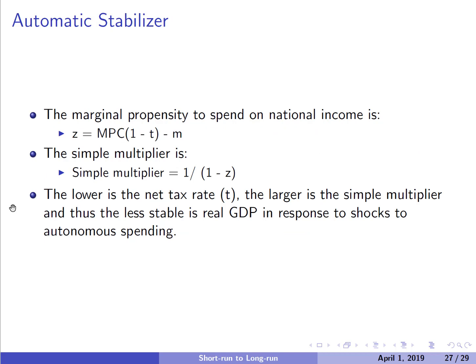Automatic stabilizers are related to the slope of the AE curve, Z, which is related to the slope of the AD curve. Anything that makes Z small makes the simple multiplier smaller and the economy more stable. A higher tax rate (higher little t) makes Z smaller. A lower marginal propensity to consume makes Z smaller. A higher marginal propensity to import makes Z smaller. These factors keep our economy from being pushed around too much by shocks to the AD curve.